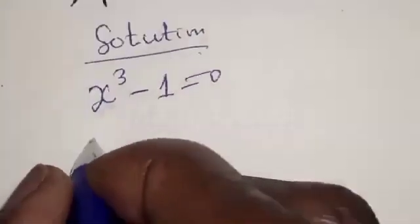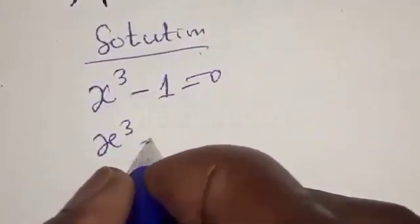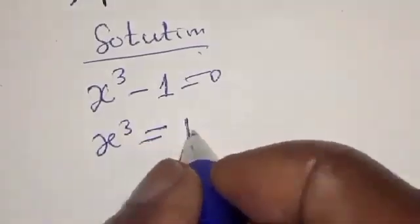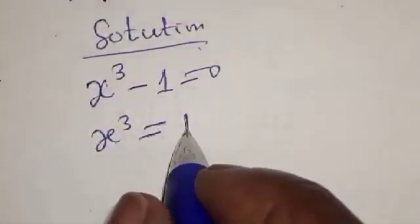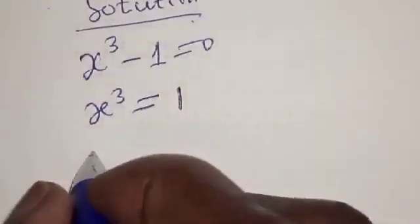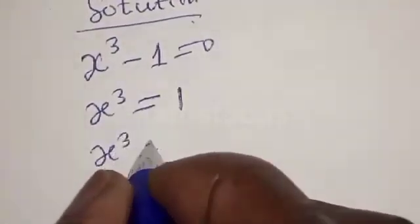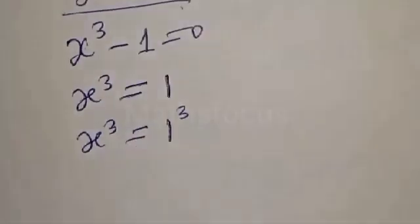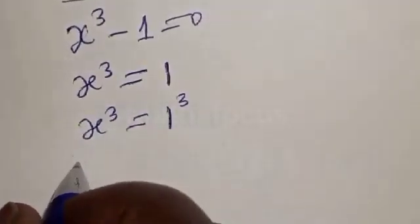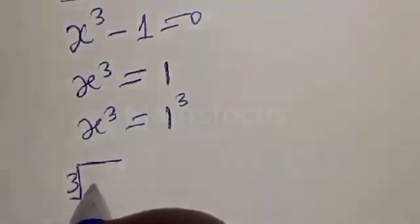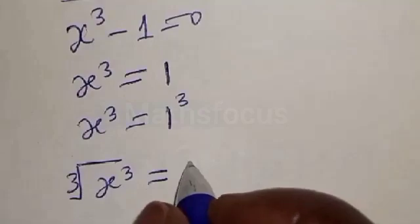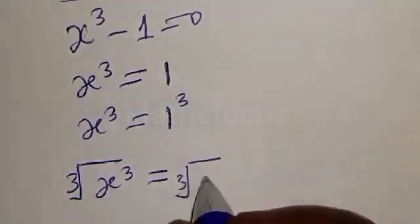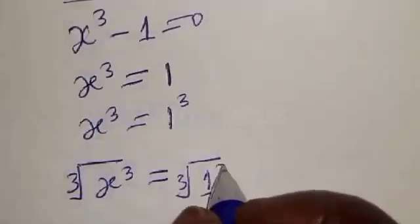This can be expressed as X cubed is equal to 1. And 1 is the same thing as 1 cubed. So we have X cubed is equal to 1 cubed. Let's take the cube root of both sides — that is, cube root of X raised to power 3 is equal to cube root of 1 raised to power 3.